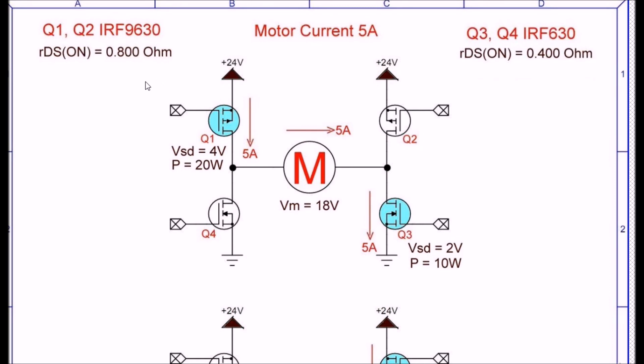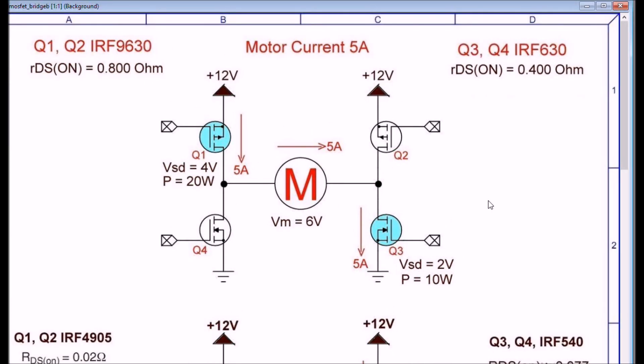All right here I'm running the same circuit as before but I'm running it at 6 volts with the same components and assuming 5 amps. What you have seen here I dropped 5 volts - 4 volts in Q1, 2 volts in Q3 - leaving me 6 volts for the motor.